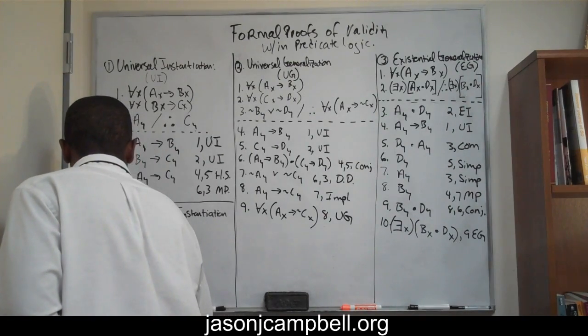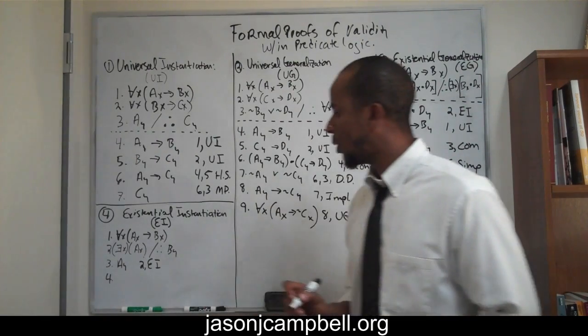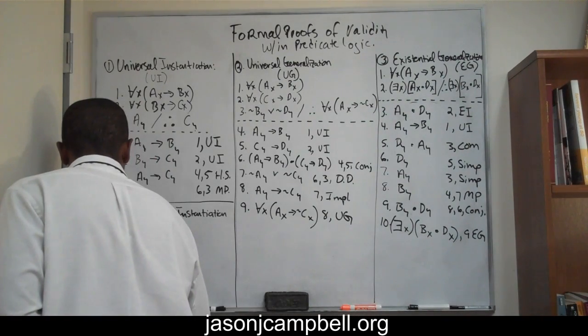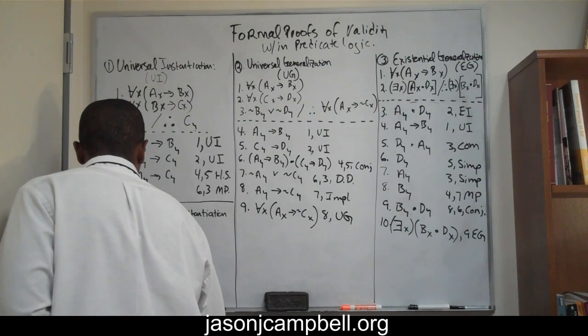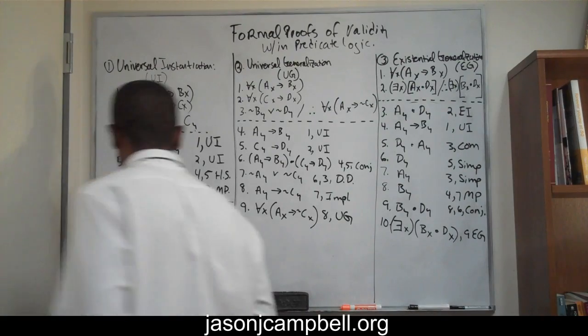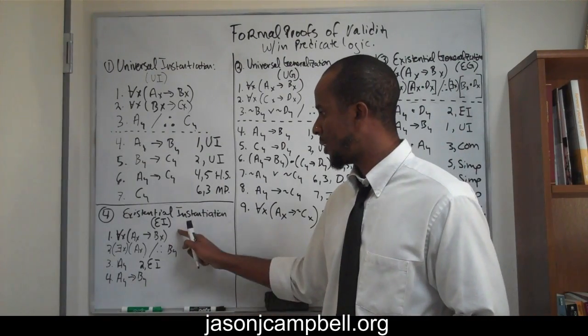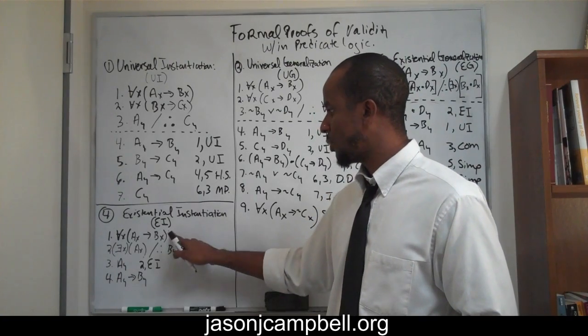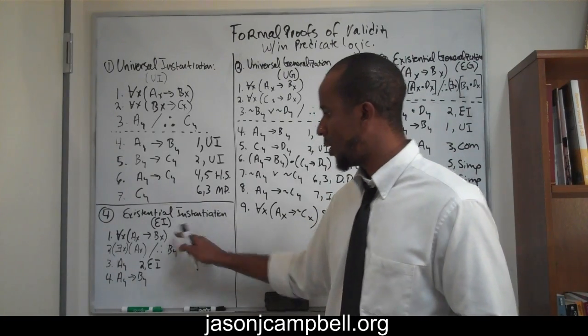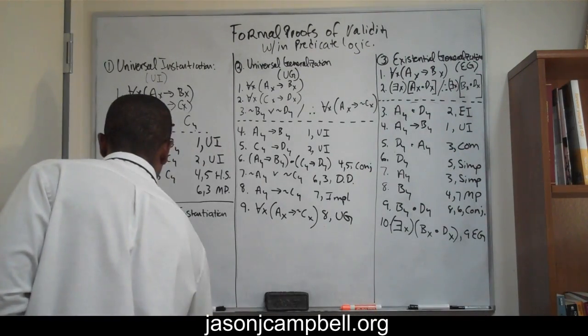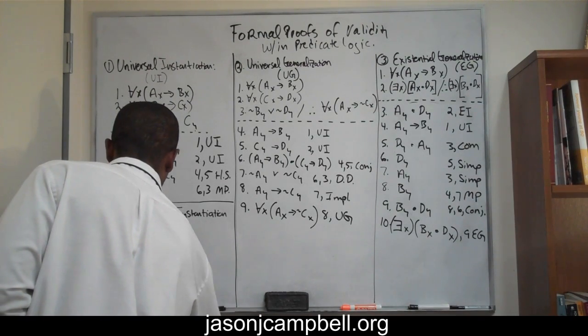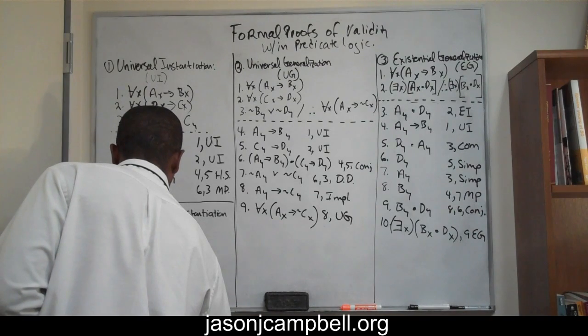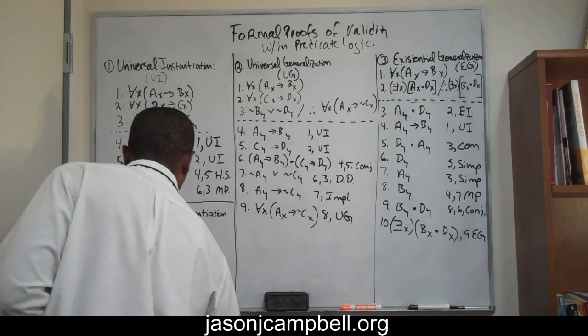Then we go to line four. Line four, we're able to instantiate our universal claim, which is if y is an a, then y is a b. We're able to instantiate our universal claim, if y is an a, then y is a b, and that's universal instantiation on line one. Let me move this over so that it's in line, this is two, there you go, and this is line one, ui.